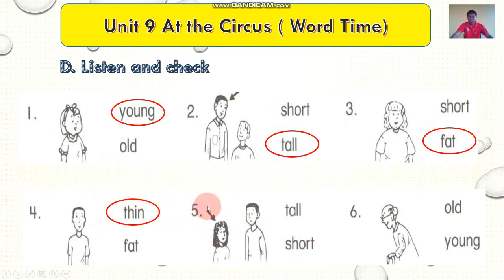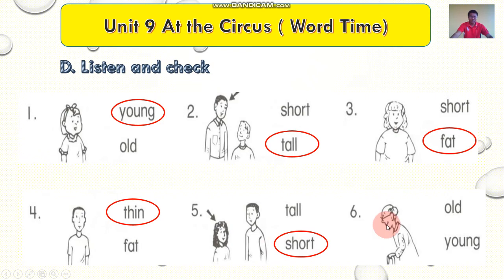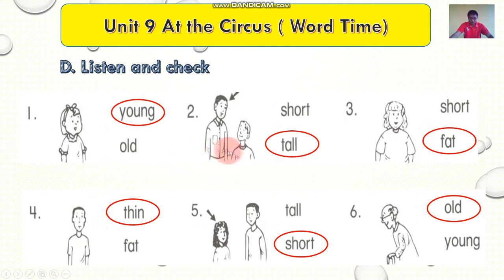Number five: short. Short. Sự khó, short. Phraya tha, tiieb. Okay. Number six: old. Old. Sự khó, old. Yes everyone, check your exercise please. Yeah, are you okay with this exercise? Yes, thank you for watching this video. Okay everyone, thank you so much for joining us today and we'll see you next time.